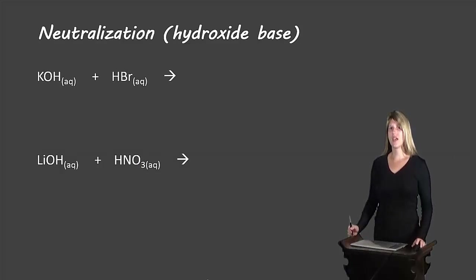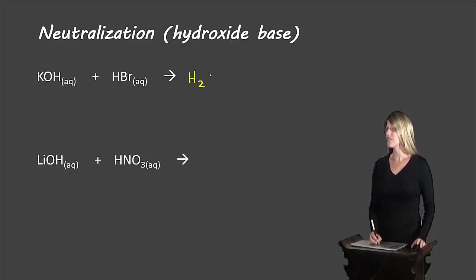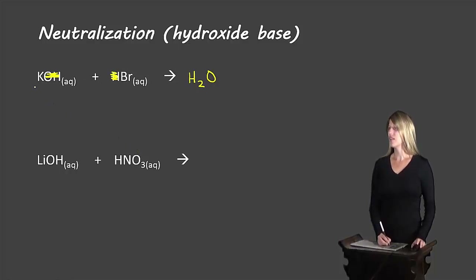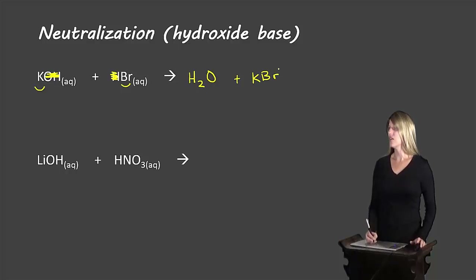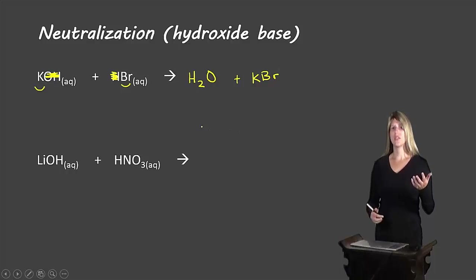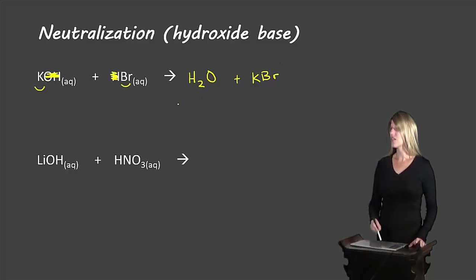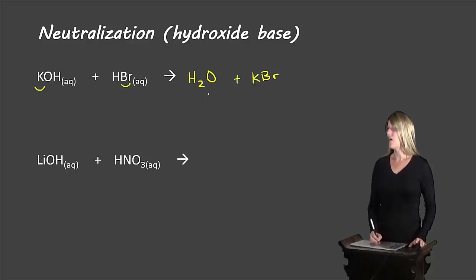Let's look at how we would predict these types of reactions. We know we're going to end up with water as a product, so we can write that right away. Water comes from the OH of the base and the proton from the acid, so we cross those out. That leaves us with potassium and bromine, which come together to form the salt KBr. Potassium has a 1+ charge and bromine a 1− charge, giving us potassium bromide with no subscripts. Balancing: one potassium, one oxygen, two hydrogens, and one bromine on each side — it's all balanced.